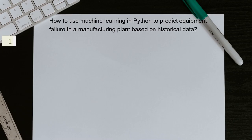In this video, I want to show you how you can implement a really interesting machine learning task with Python step by step. But first, let's take a look at the task: how to use machine learning in Python to predict equipment failure in a manufacturing plant based on historical data. Now let's see the solution and write the code step by step. But before that, please subscribe to my channel for more upcoming videos.